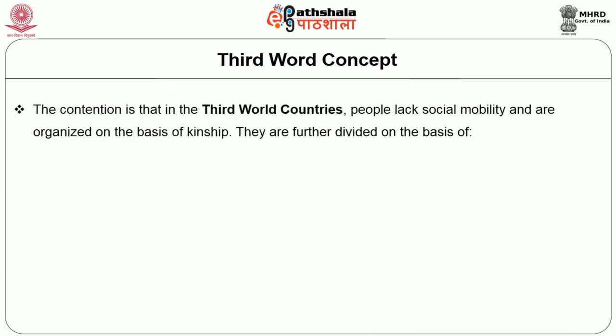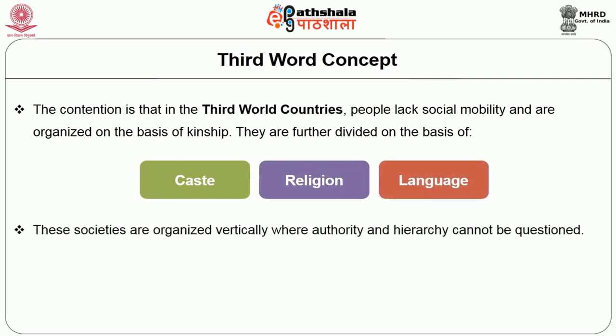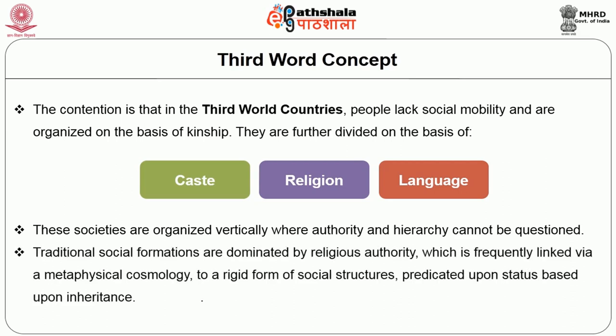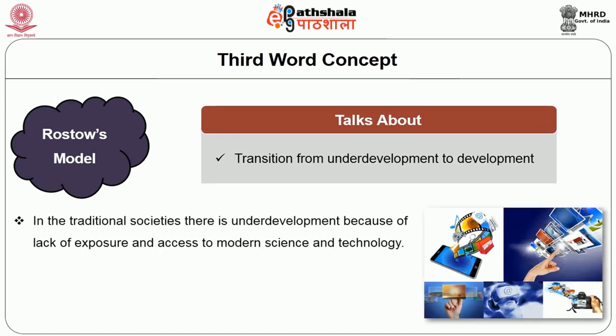In third world countries, people are said to lack social morality and are organized on the basis of kinship, further divided on the basis of caste, religion and language. These societies are organized vertically, where authority and hierarchy cannot be questioned. Traditional social formations are dominated by religious authority, frequently linked with a metaphysical cosmology, leading to rigid social structures based upon inherited status. Rostow's model talks about the transition from underdevelopment to development; in traditional societies, underdevelopment exists because of lack of exposure to modern science and technology.